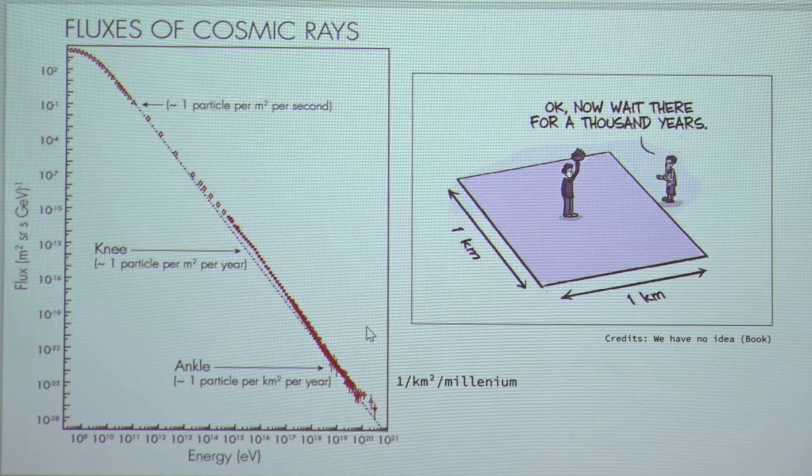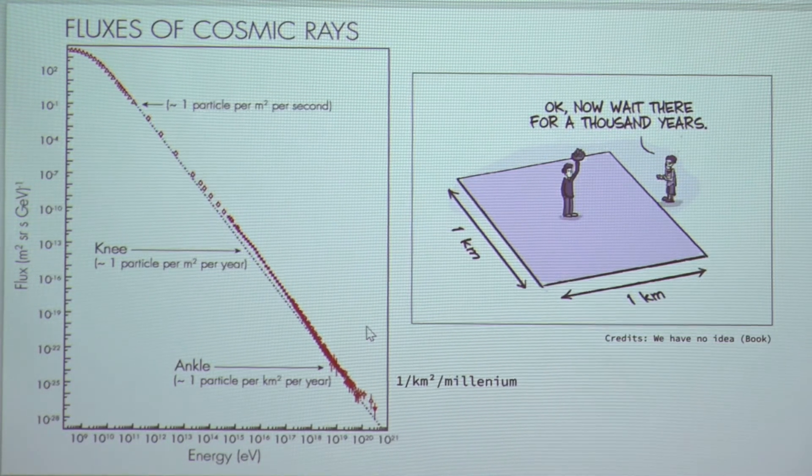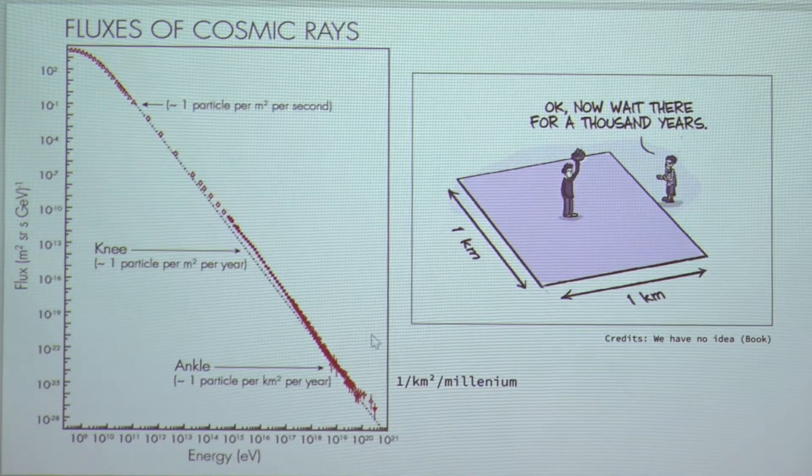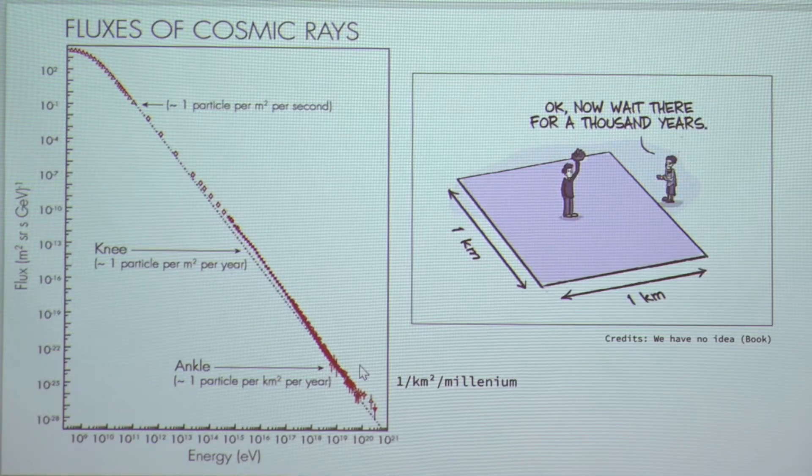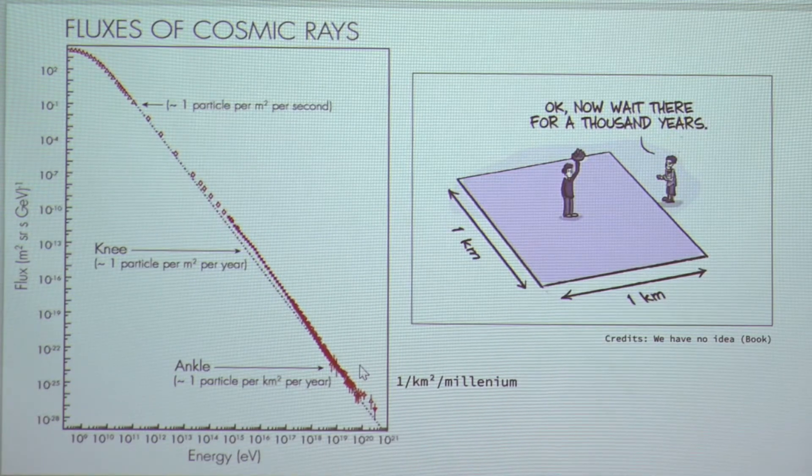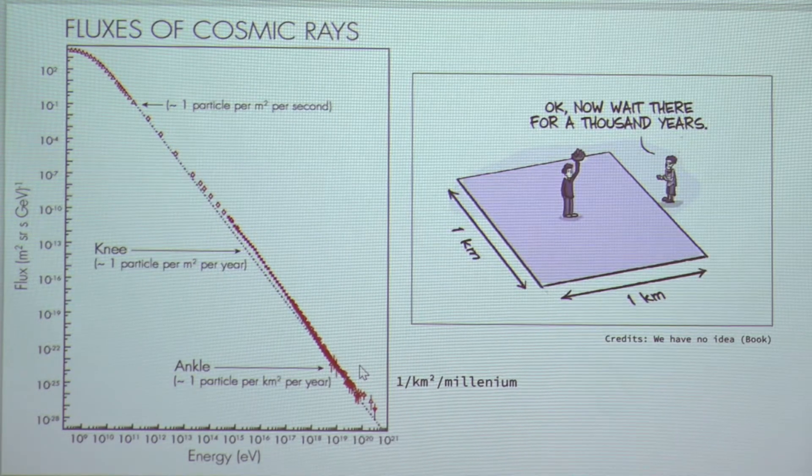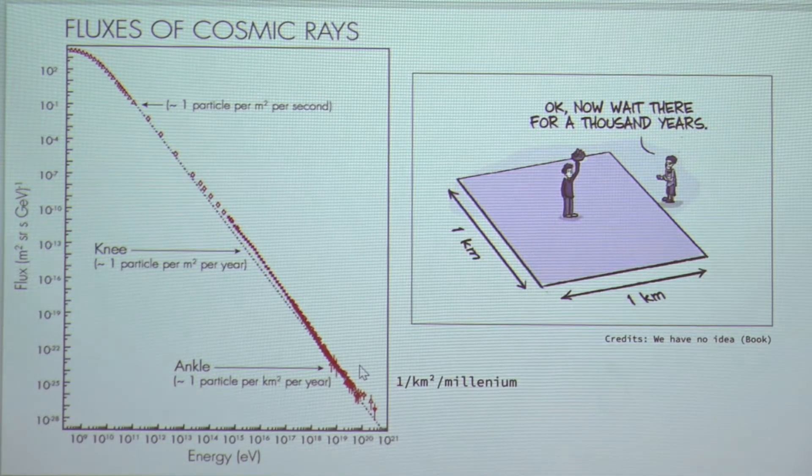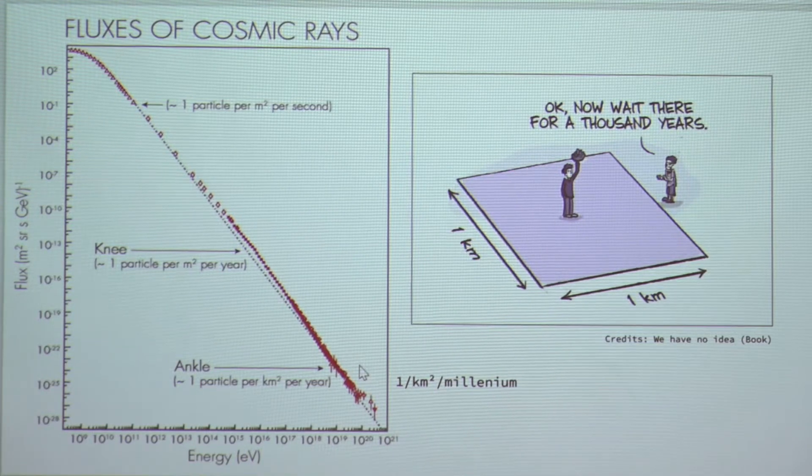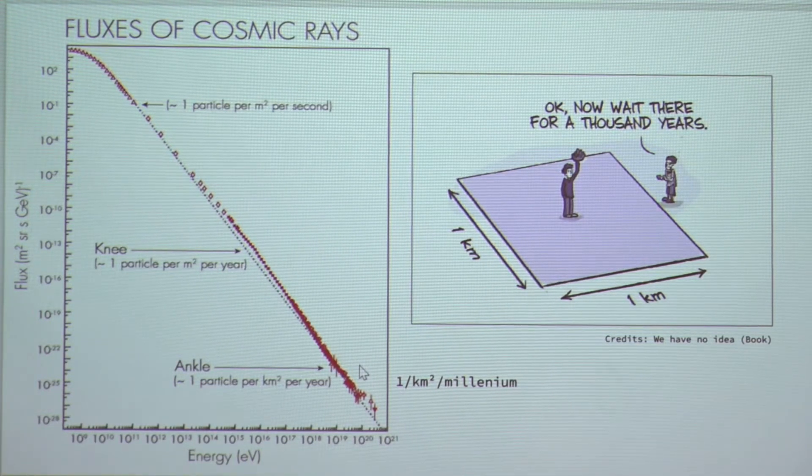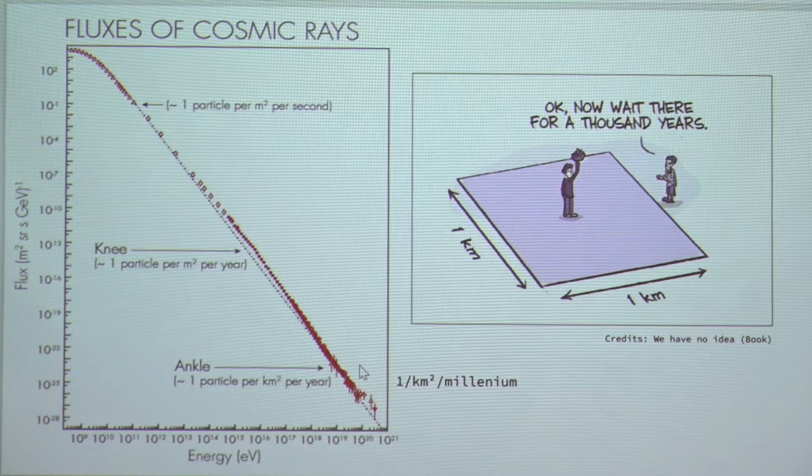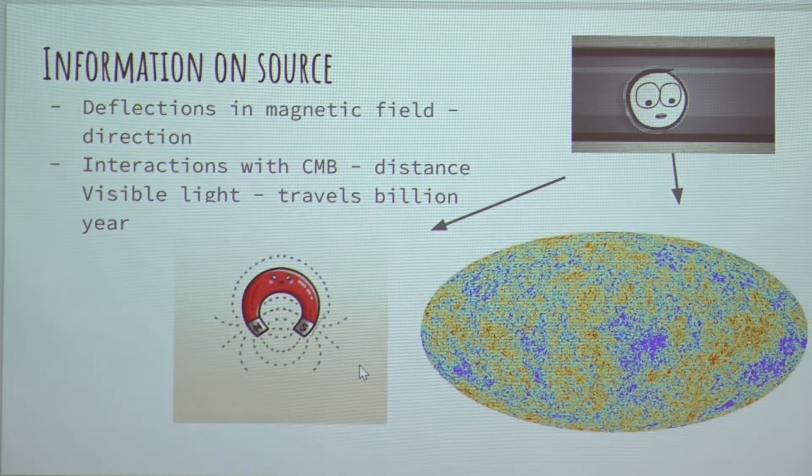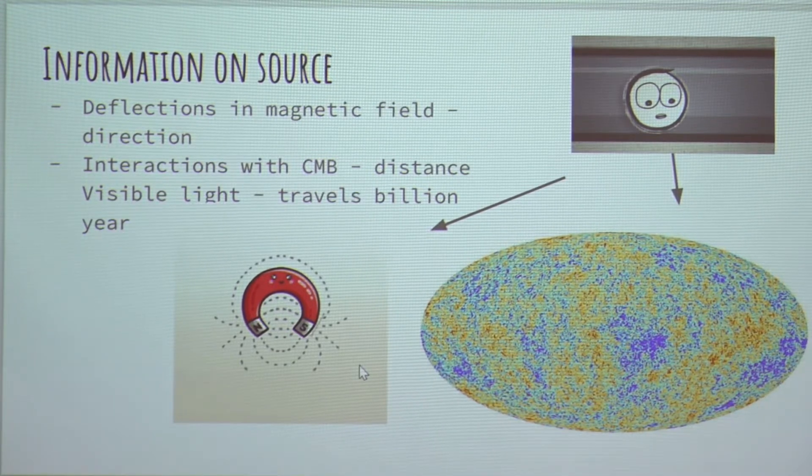And if we think of the energies that the Oh My God particle had, we expect that a particle like this would hit Earth at the rate of one per kilometer square in a thousand years. That leaves us with limited data at the highest energy. So what do we do to get any information on the source?